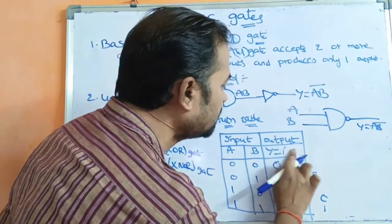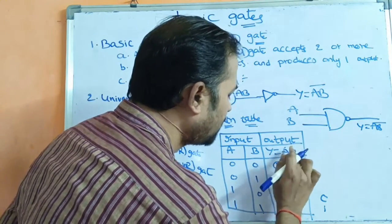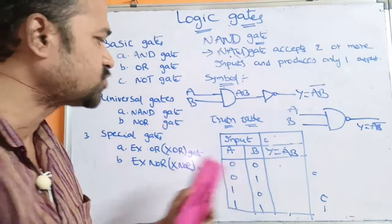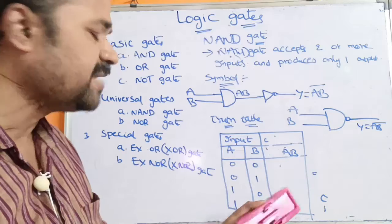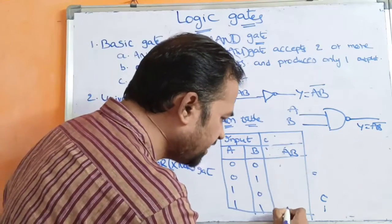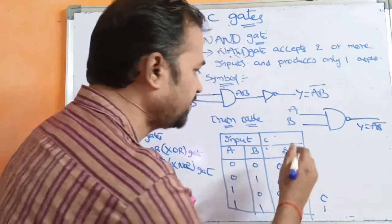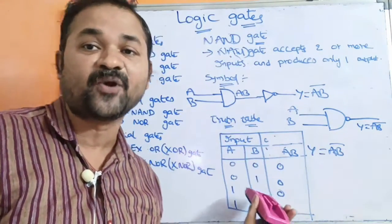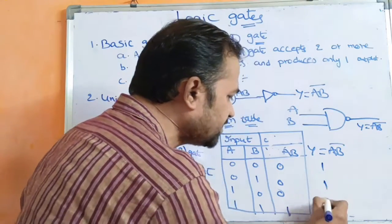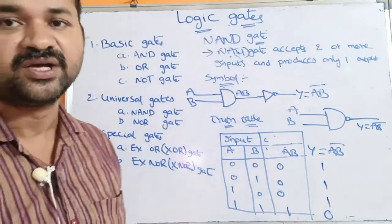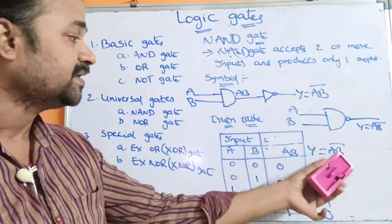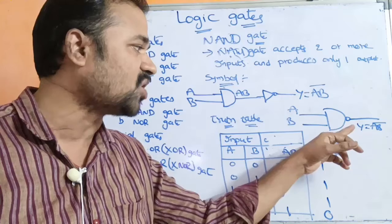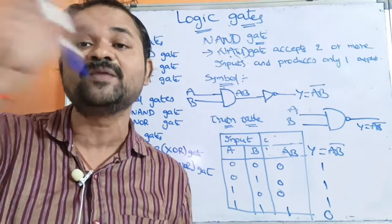Now let us see the truth table for NAND gate. Y is equal to A dot B bar. First let us write for A dot B: if inputs are 1, 1 then the output is 1; otherwise the result is 0. Whereas for the NAND gate the output is the complement of the product — so 0 changes to 1, 0 changes to 1, 0 changes to 1, and 1 changes to 0. This is the truth table for the NAND gate. The bubble after the AND gate symbol represents the complement operation.